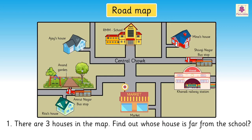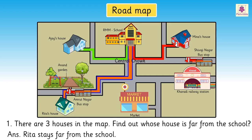Question 1: There are three houses in the map. Find out whose house is far from the school. To find the answer, first we will have to trace the path from each one's house to the school. On tracing, we get that Rita stays far from the school.